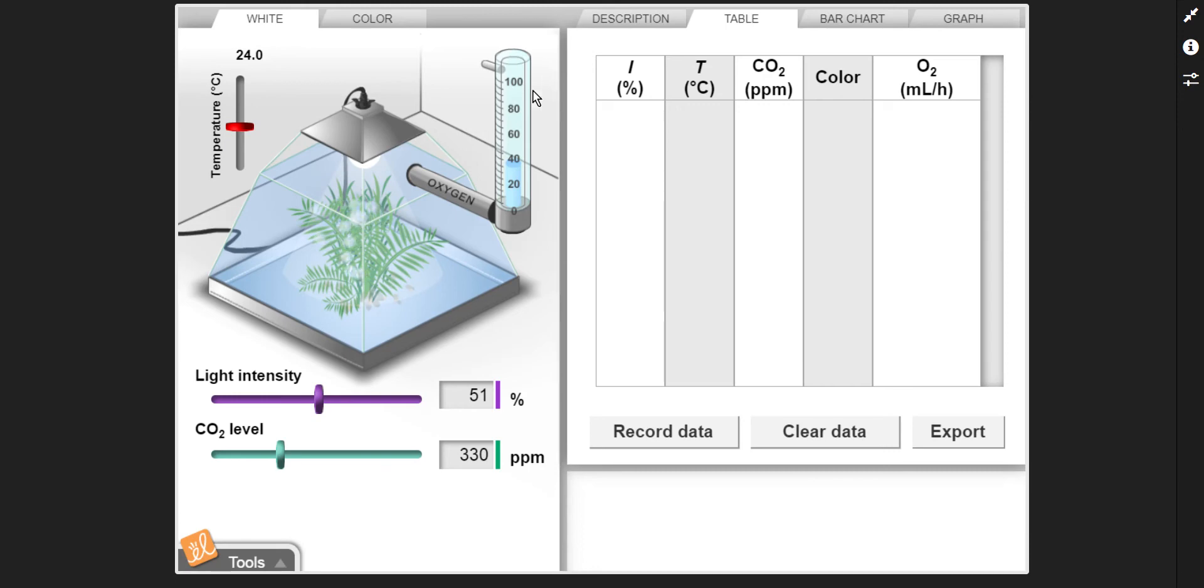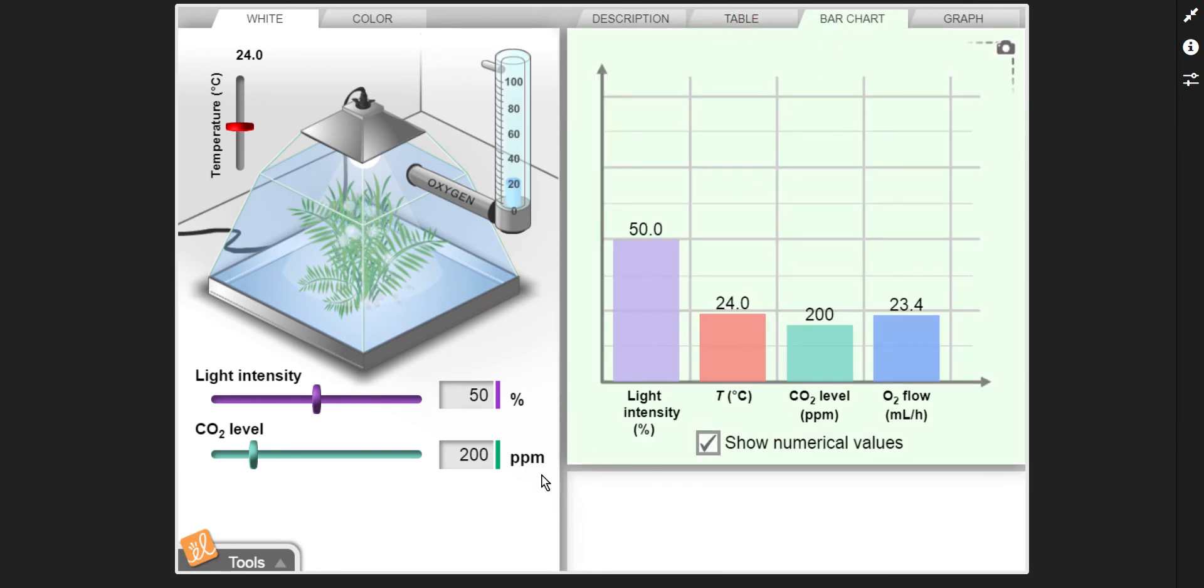And it's asking us to set some factors. So it's saying to make it 24 degrees Celsius, 50% light intensity, and 200 parts per million. It says to go to the bar chart, show numerical values. So what we're looking at in limiting factors is trying to figure out which of these factors is the problem, which is holding this back.